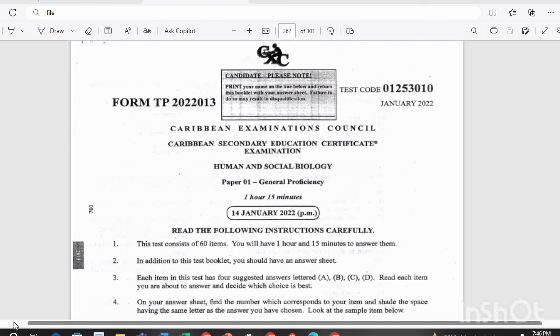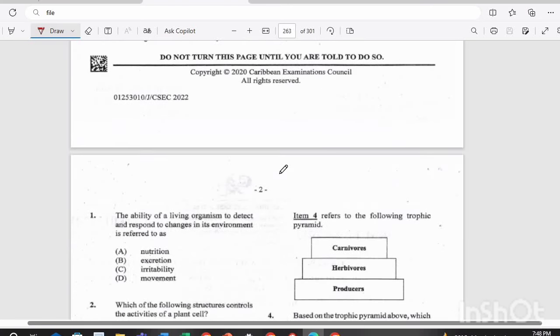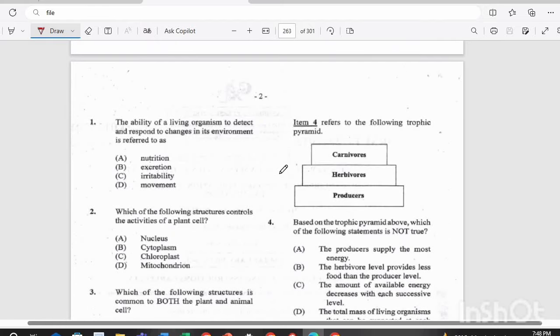Hello and welcome back to Past Papers 101 with Ms. Edwards. Today we'll be looking at a paper one for Human and Social Biology. This is the January 2022 paper, so if you've never seen this paper before, let's see what the questions look like. Remember for Human and Social Biology paper one you have a total of 1 hour and 50 minutes to complete 60 items. So let's get on board with this paper. All right, let's look at the question and you can quiz yourself as we go along.